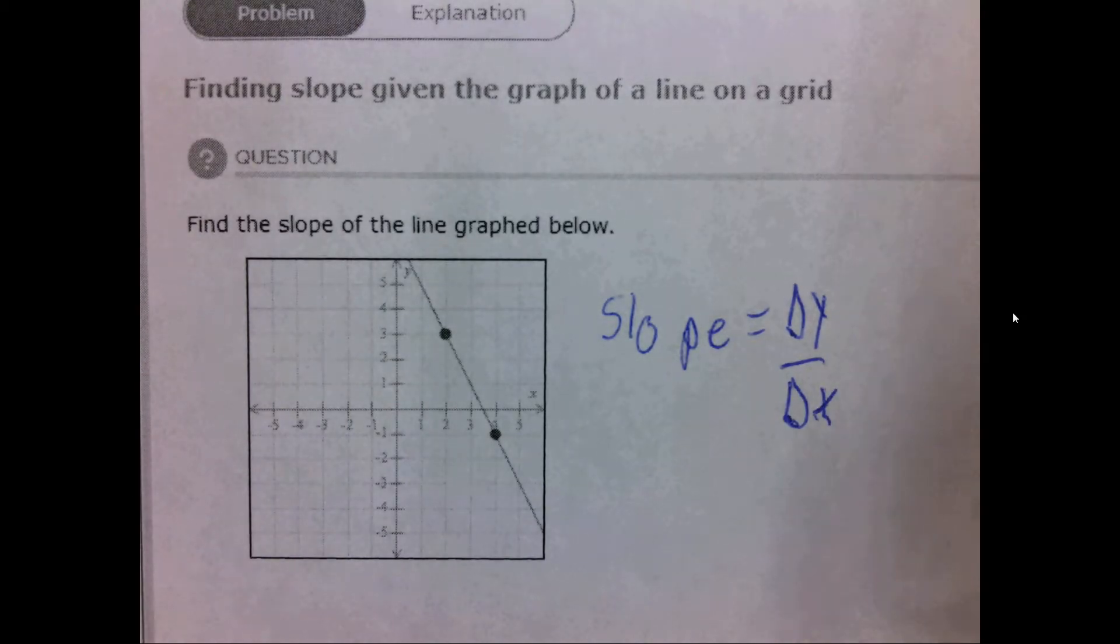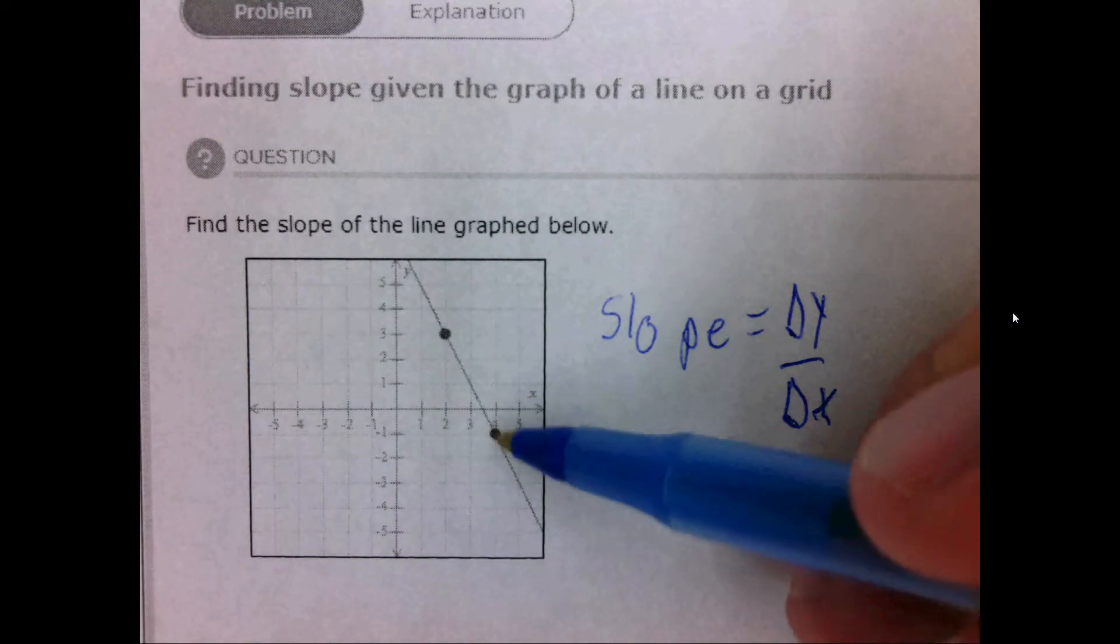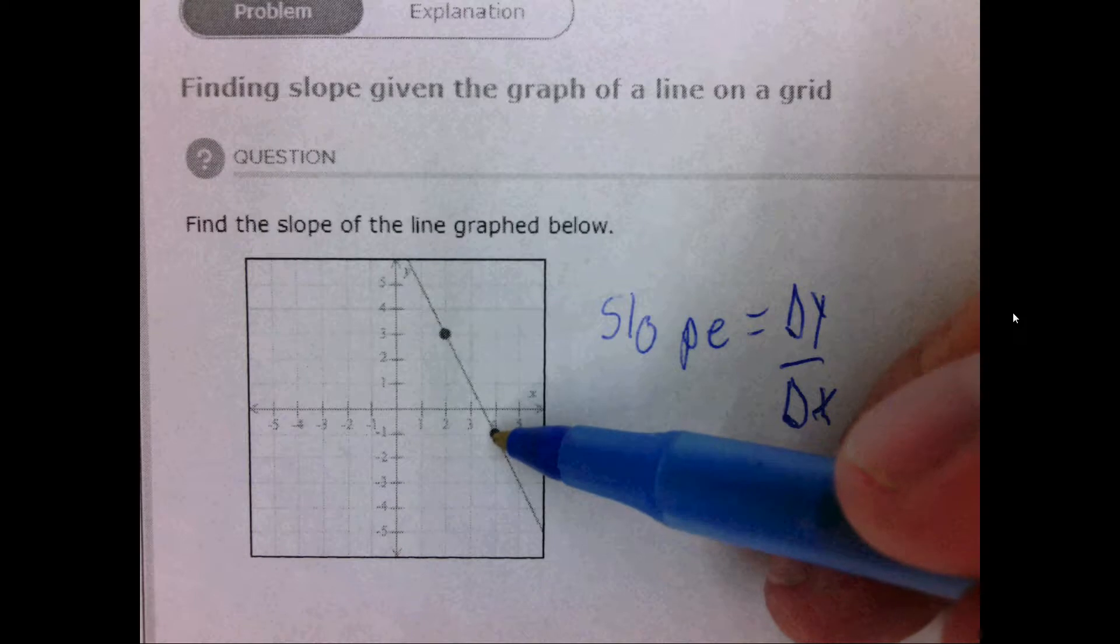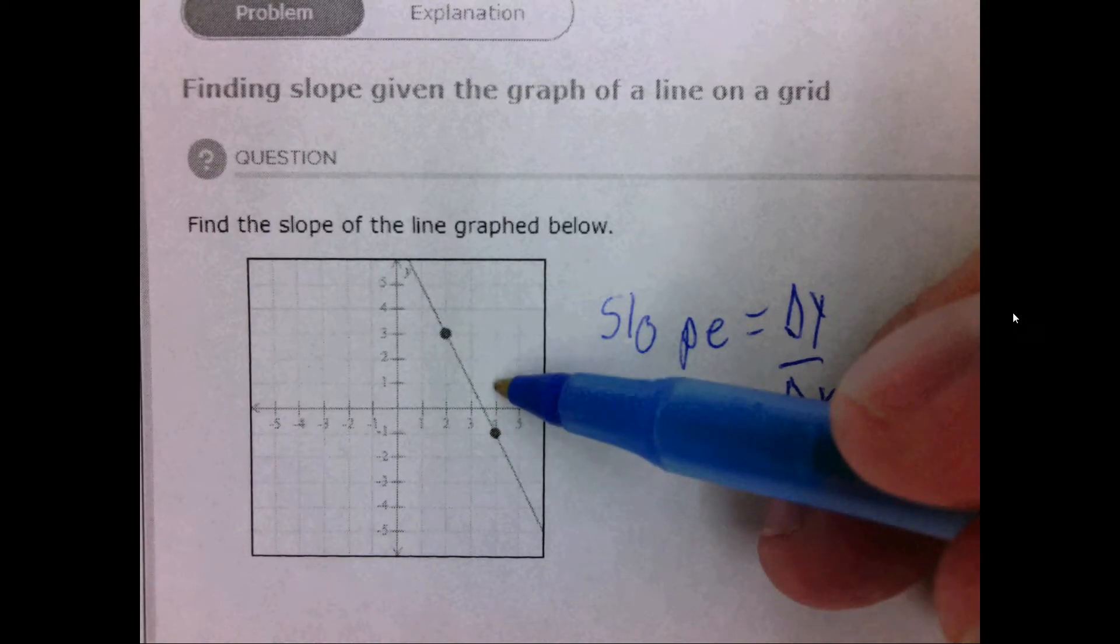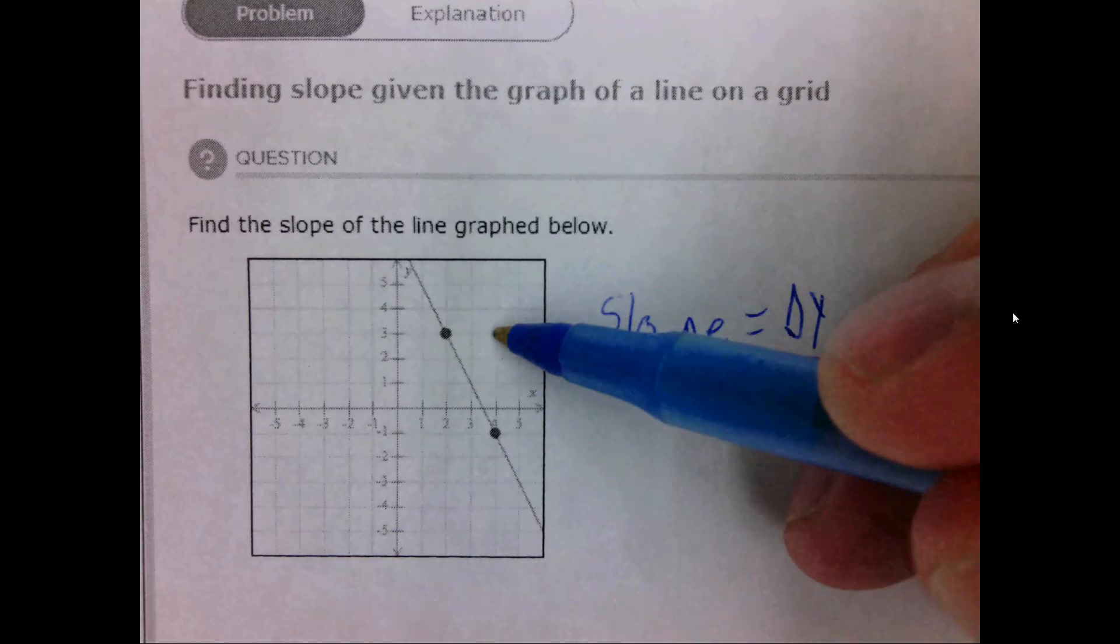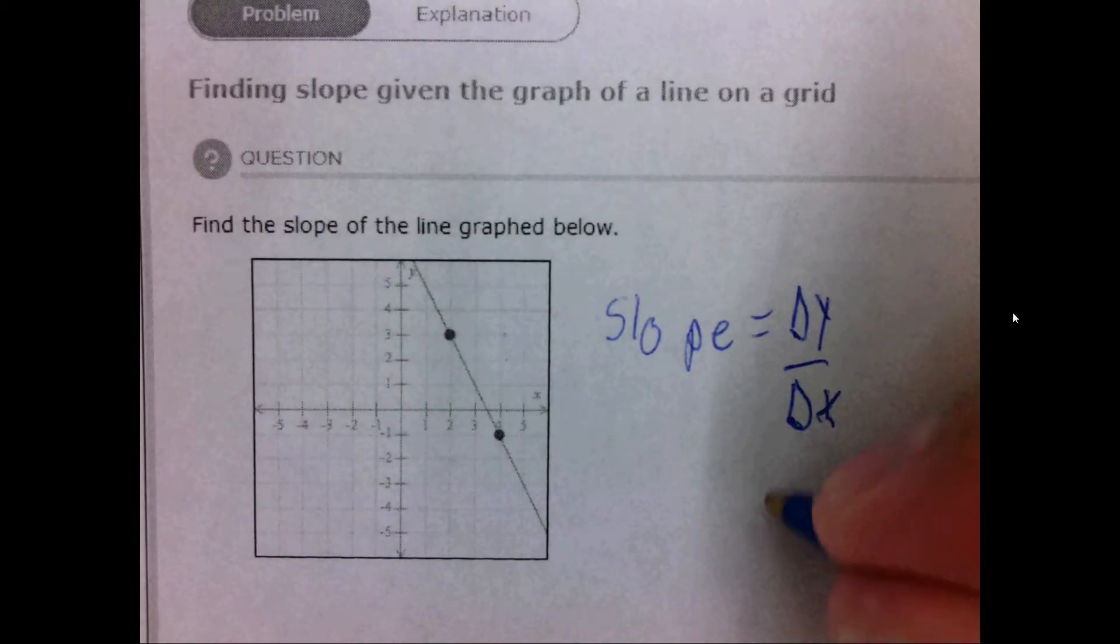In order to find the slope we need to find out the change in y first to get from this point to this point. To find the change in y we simply count 1, 2, 3, 4. We had to go up 4 to get to the other point. So delta y is 4.